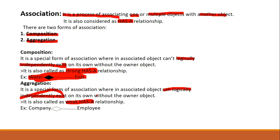In UML notation, a solid diamond is used for composition and a light (hollow) diamond is used for aggregation. In both cases, the diamond should be pointing towards the owner object.